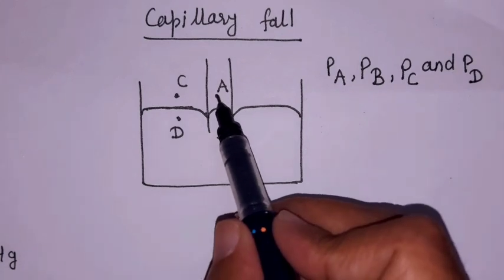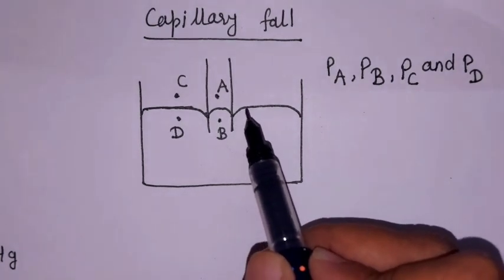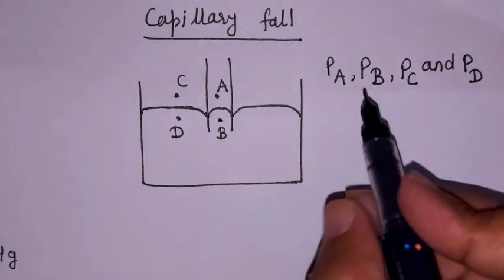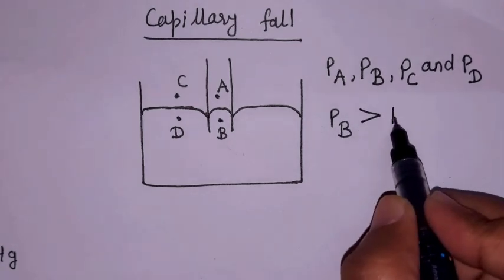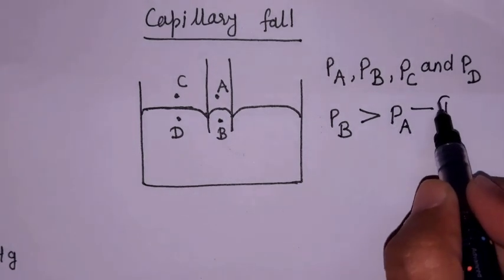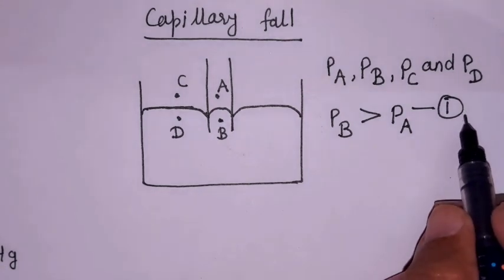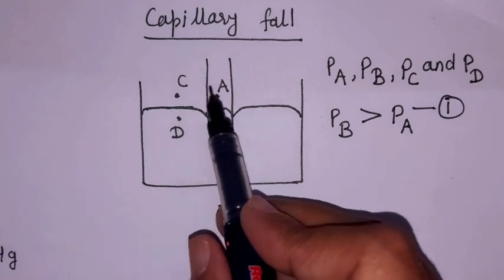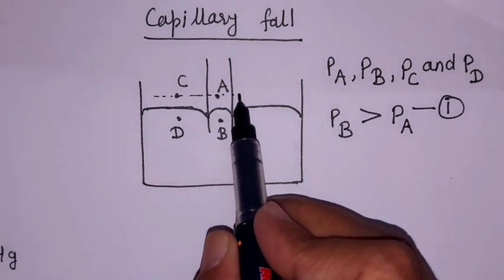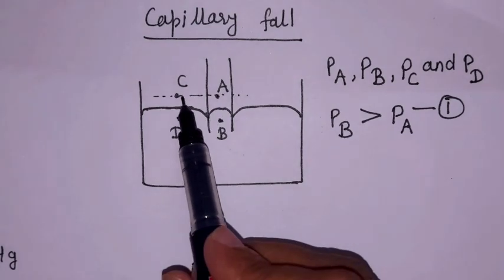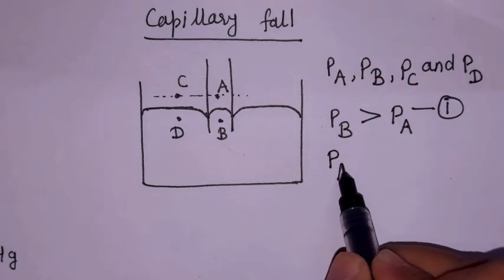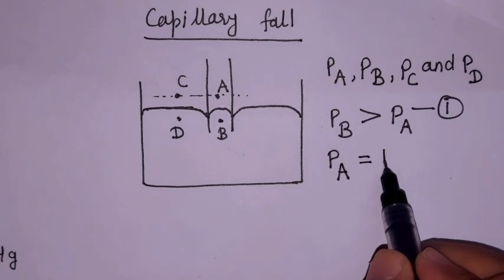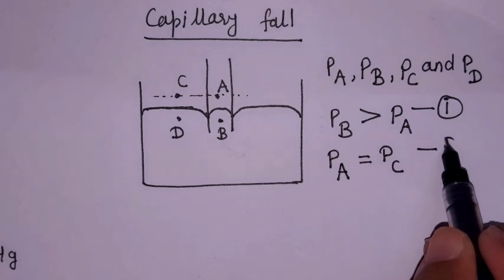We compare pressures at points A and B. Since pressure on the concave side is always greater, pressure at B is greater than pressure at A — this is Reason 1. Since points A and C are at the same horizontal level in air, both experience atmospheric pressure: pressure at A equals pressure at C — this is Reason 2.